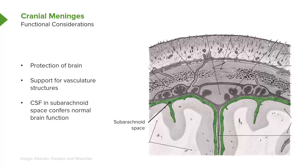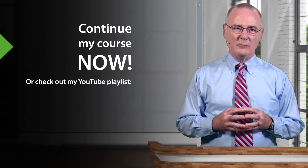And lastly, cerebral spinal fluid is found in a space called the subarachnoid space, and cerebral spinal fluid helps to confer normal brain function. The subarachnoid space is identified right in through here, and we'll discuss this space in additional detail shortly.